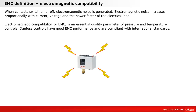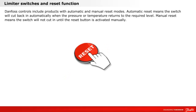Electromagnetic compatibility, or EMC, is an essential quality parameter of pressure and temperature controls. Danfoss controls have good EMC performance and are compliant with international standards. Danfoss controls include products with automatic and manual reset modes. Automatic reset means the switch will cut back in automatically when the pressure or temperature returns to the required level. Manual reset means the switch will not cut in until the reset button is activated manually.